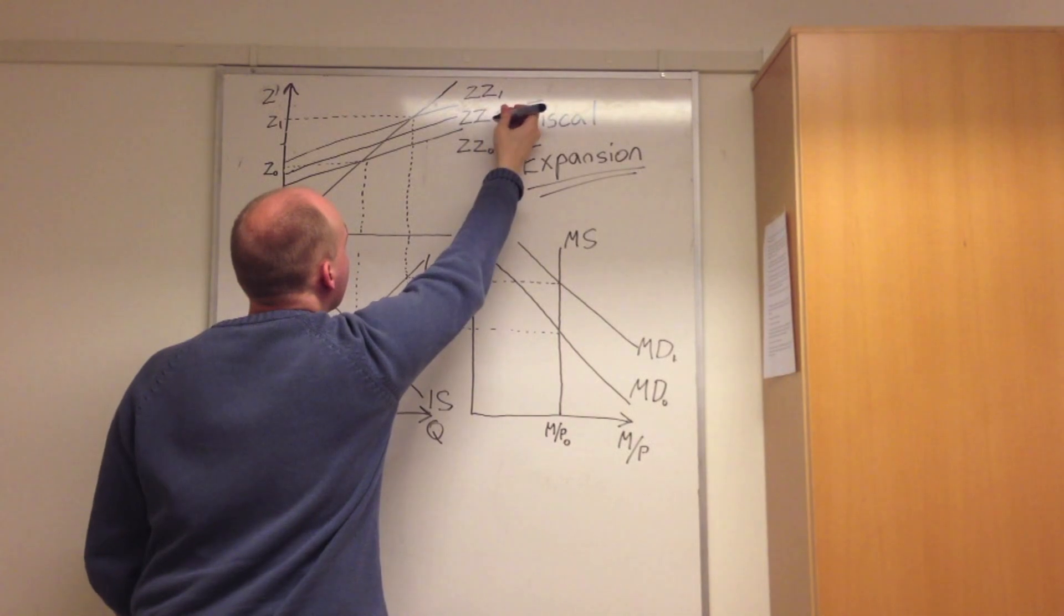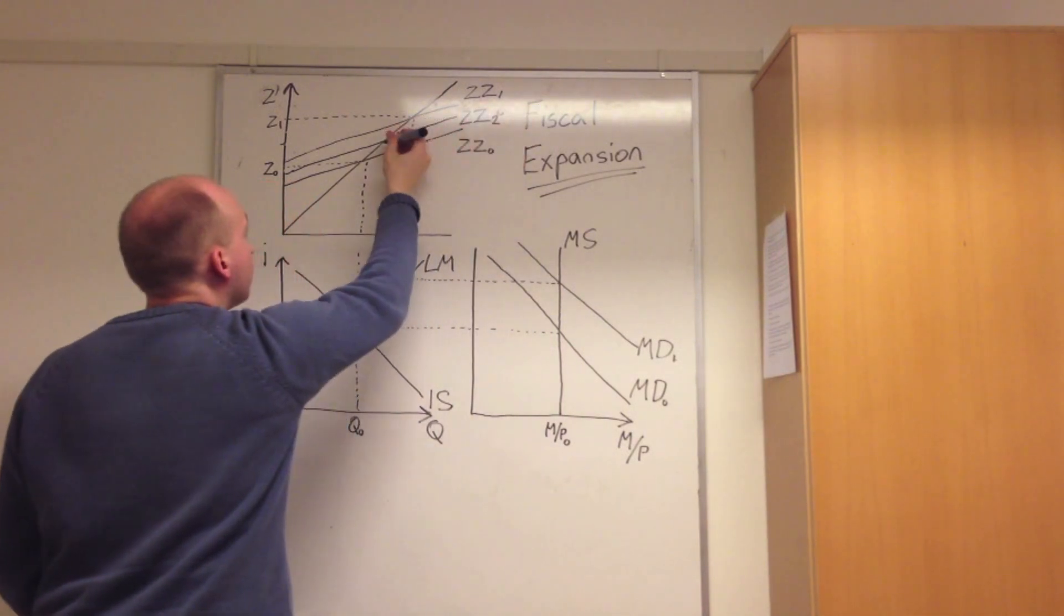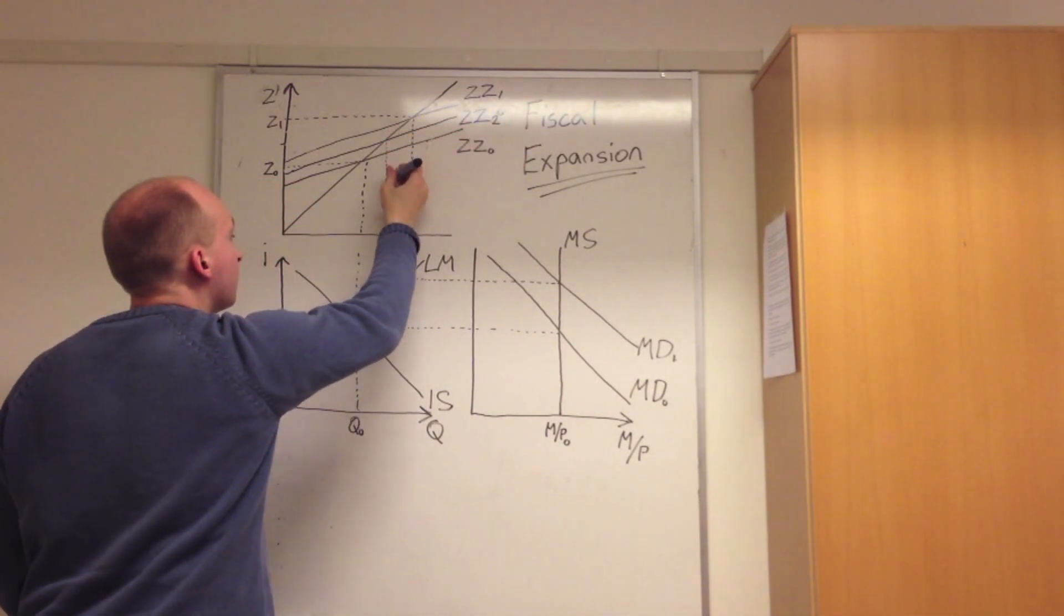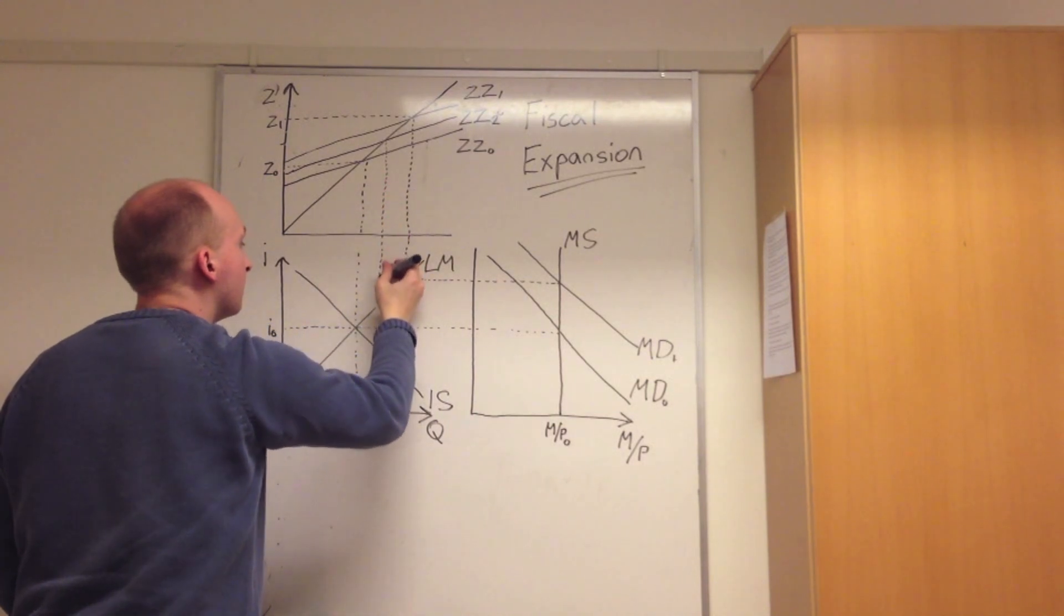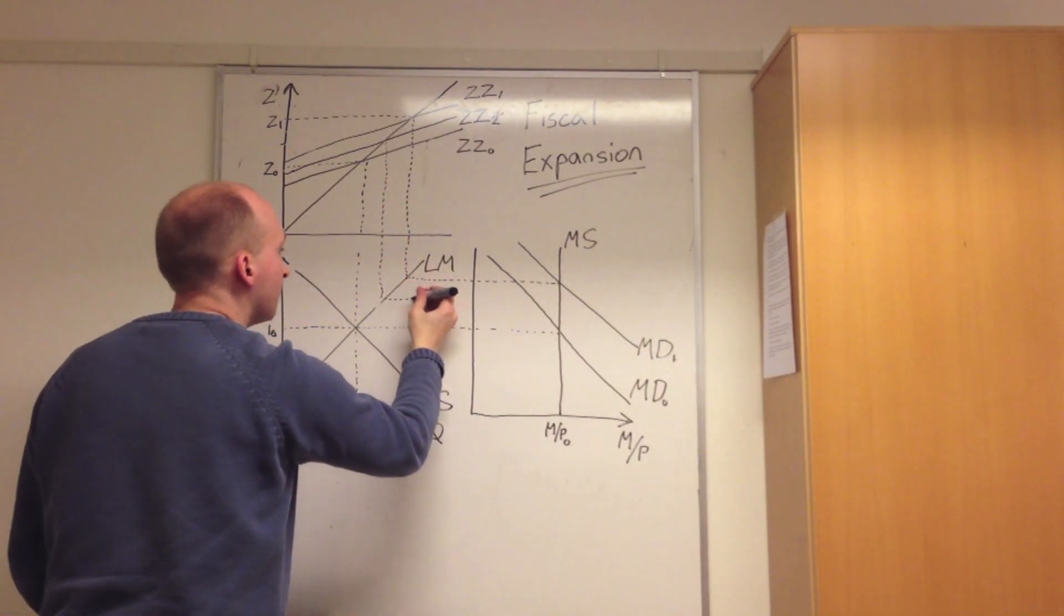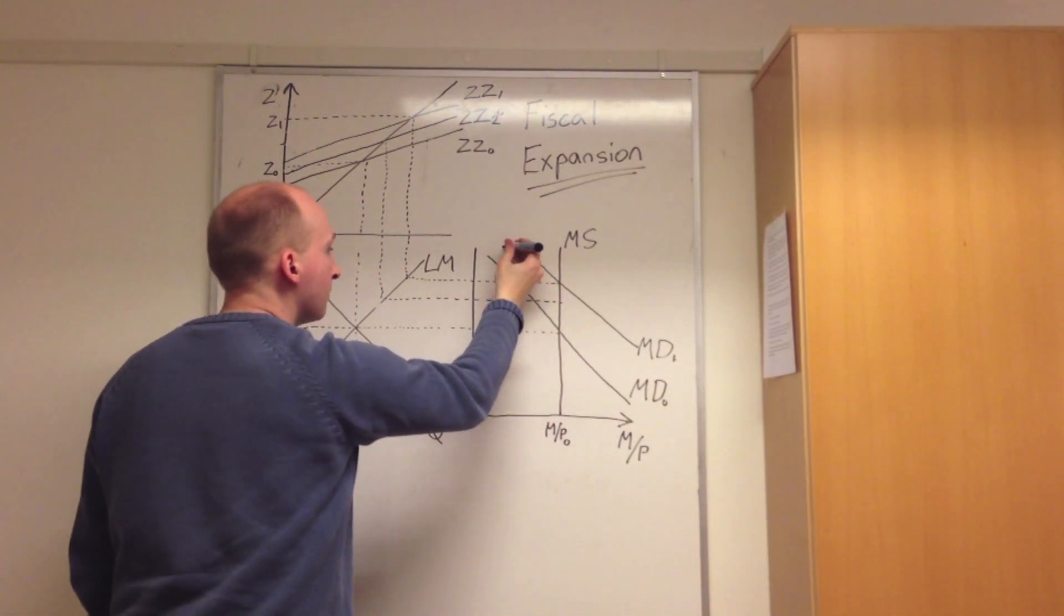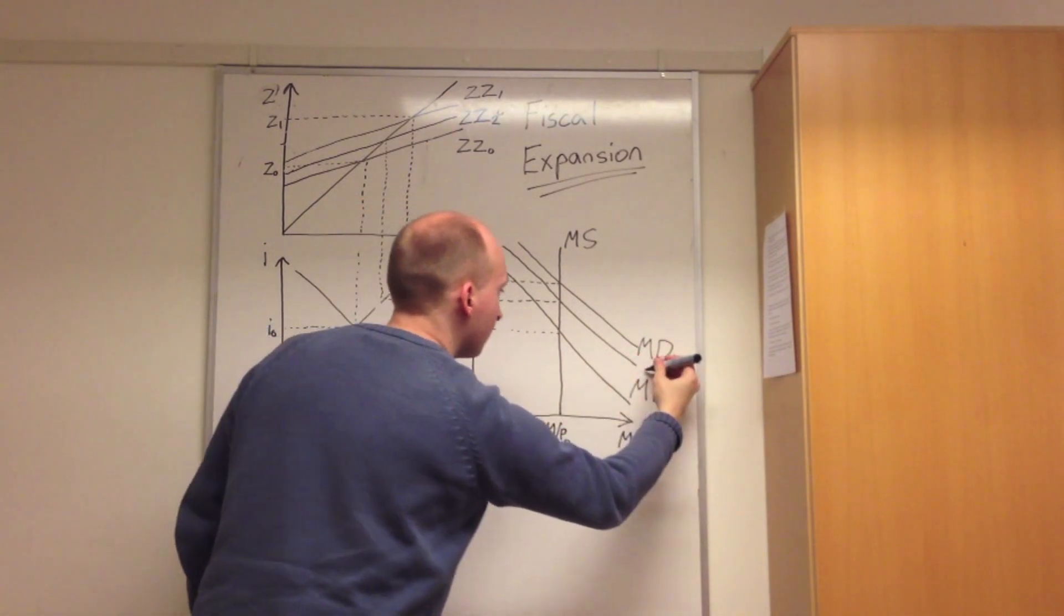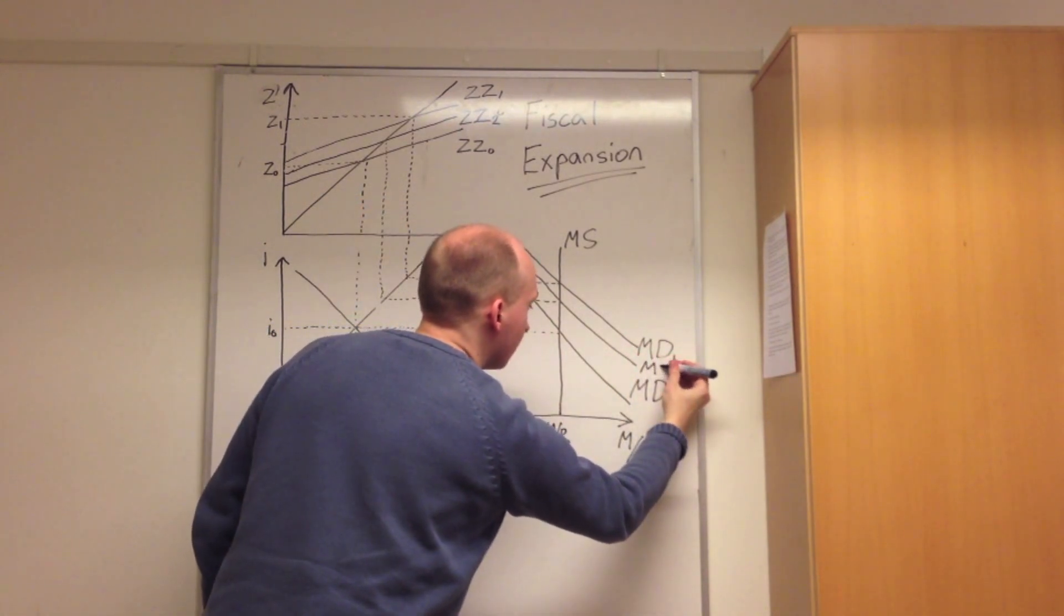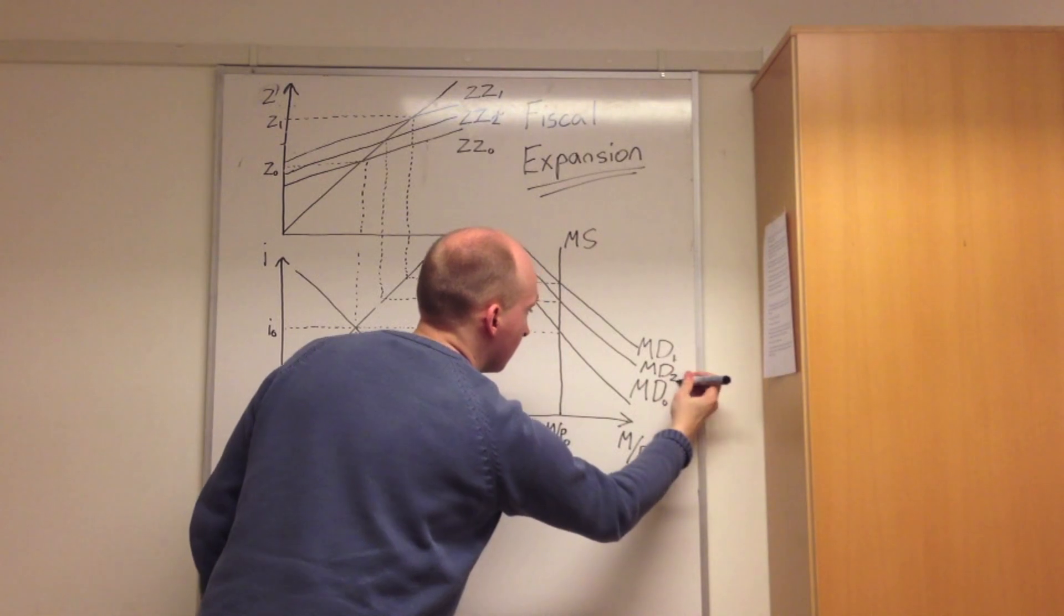A fall in demand would also mean that less money is actually demanded in the economy. And so, from going towards the LM curve and back towards the money supply curve, money demand shifts to the left from MD1 to MD2, thus giving us a lower interest rate.